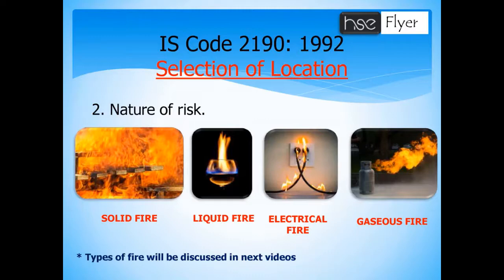Before identifying the location, you should always think about the nature of the fire risk in that location. For example, if you are going to fix a fire extinguisher in a room, you should identify what type of risk is present — whether there is a chance of solid fire, liquid fire, electrical fire, or gas fire. For different types of fires, we should use different types of fire extinguishers.